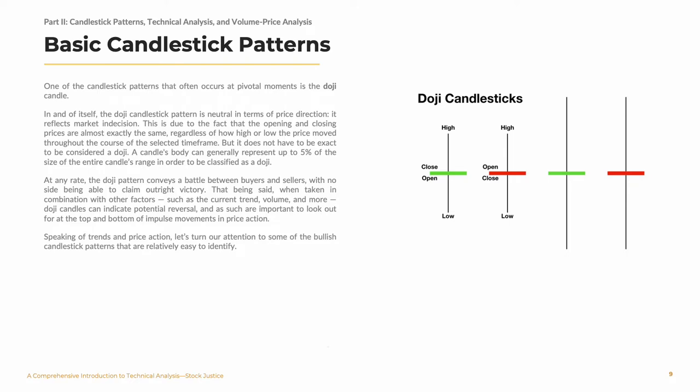One of the candlestick patterns that often occurs at pivotal moments is the doji candle. In and of itself, the doji candle pattern is neutral in terms of price direction — it reflects market indecision. This is due to the fact that the opening and closing prices are almost exactly the same, regardless of how high or low the price moved throughout the course of the selected timeframe. But it does not have to be exact to be considered a doji. A candle's body can generally represent up to 5% of the size of the entire candle's range and still be classified as a doji. The doji pattern conveys a battle between buyers and sellers, with no side being able to claim outright victory. When taken in combination with other factors, such as the current trend, volume, and more, doji candles can indicate potential reversal and are important to look out for at the top and bottom of impulse movements in price action.